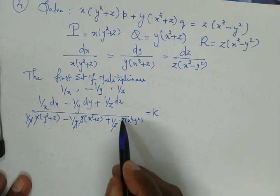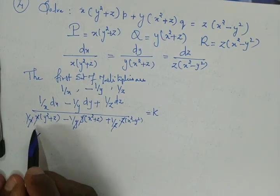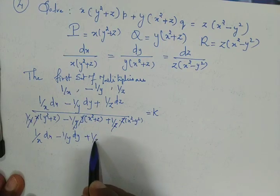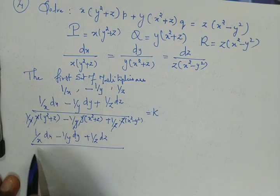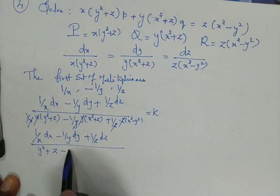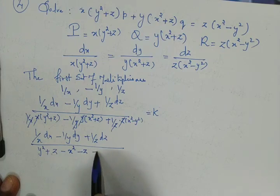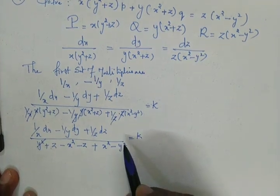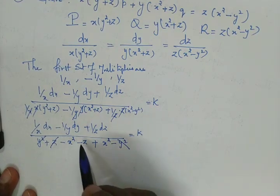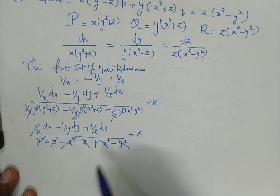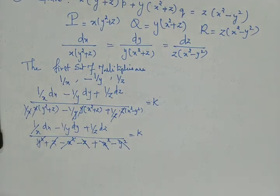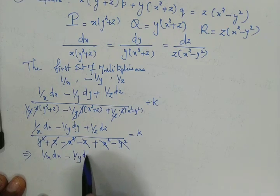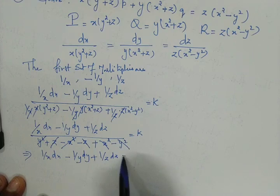After cancellation, the denominator simplifies to y² + z - x² - z + x² - y², which equals zero. So we get (1/x)dx - (1/y)dy + (1/z)dz = 0.